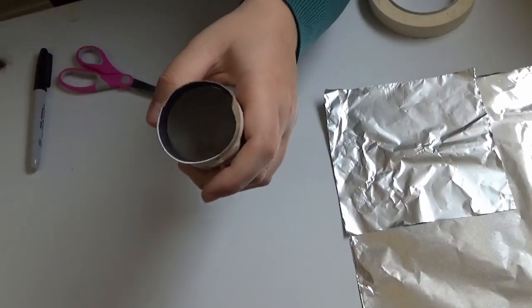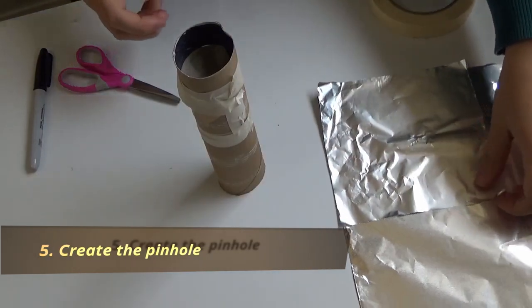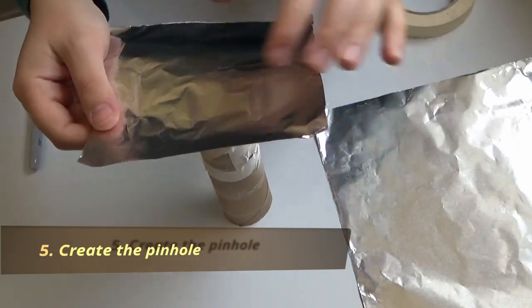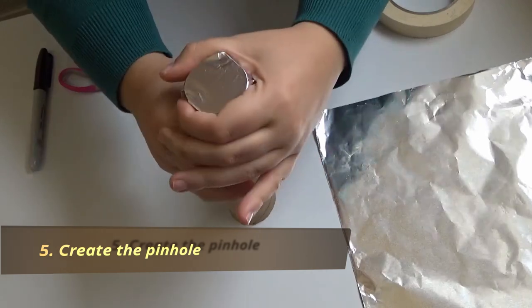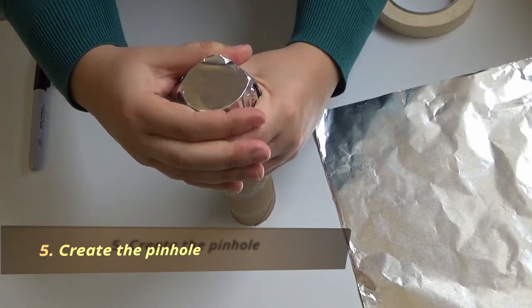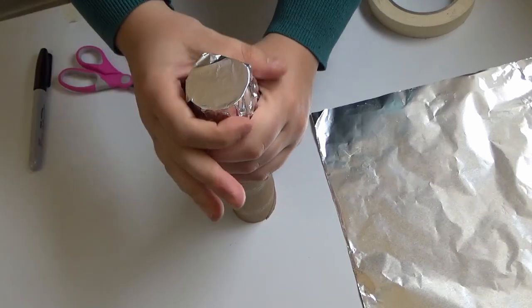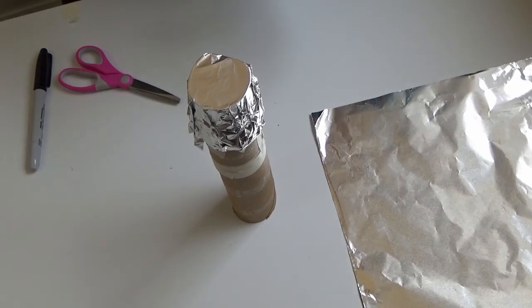It's now time to make our pinhole. Grab a small piece of aluminum foil and place it over the top like so, folding it down to create a nice light-proof cover. We can hold that in place with a little bit more masking tape.